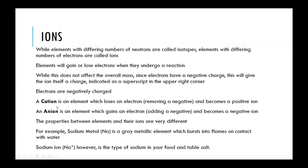A cation is an element that loses an electron, so it lost a negative charge. An anion is the exact opposite — it's an element that gains an extra electron, so you're adding a negative charge and therefore the entire element becomes negative.